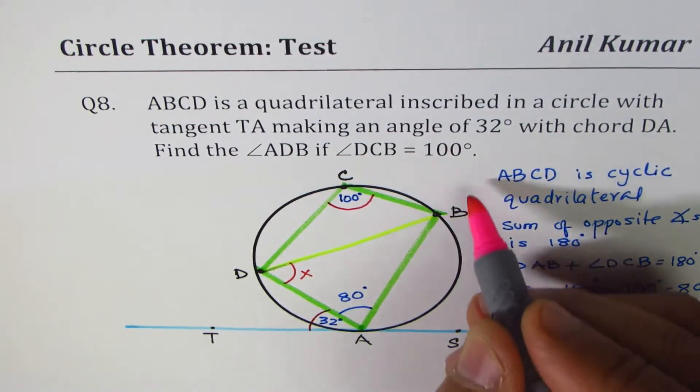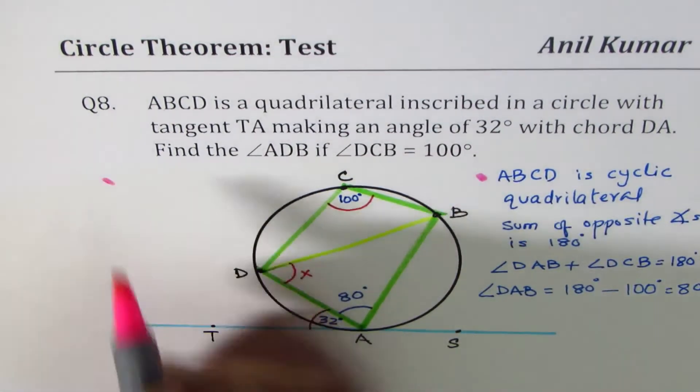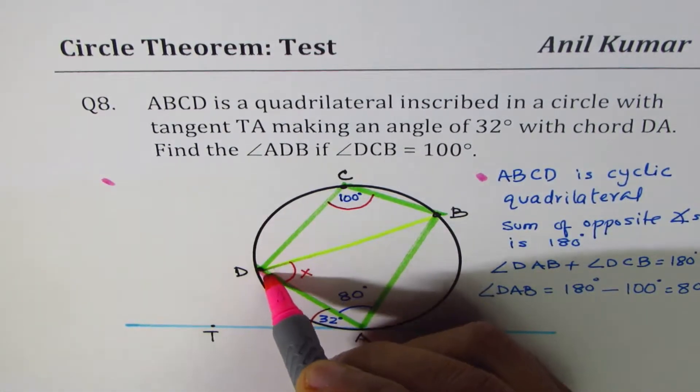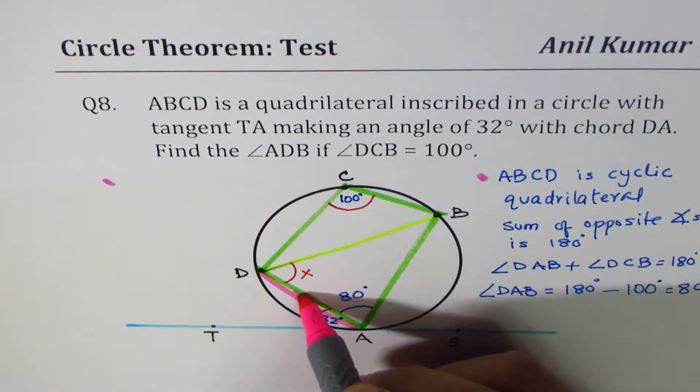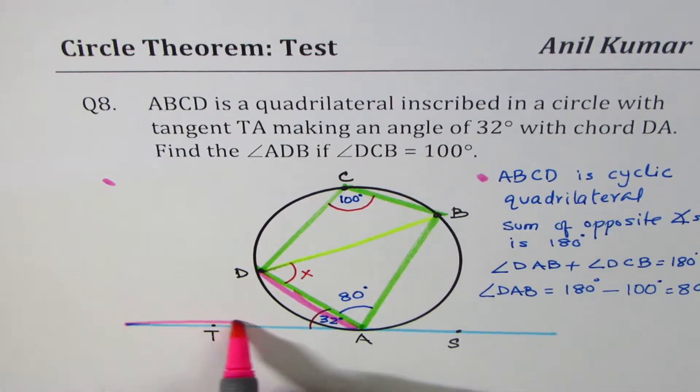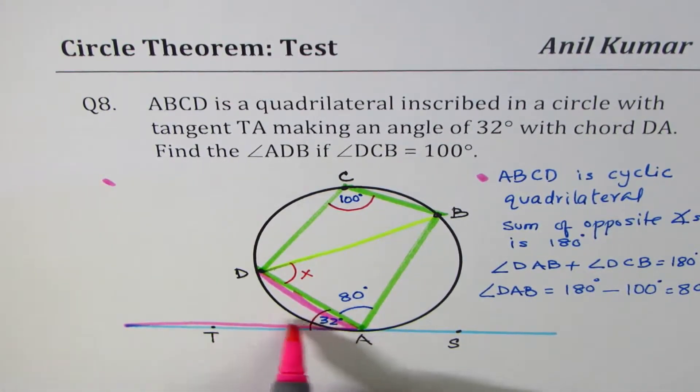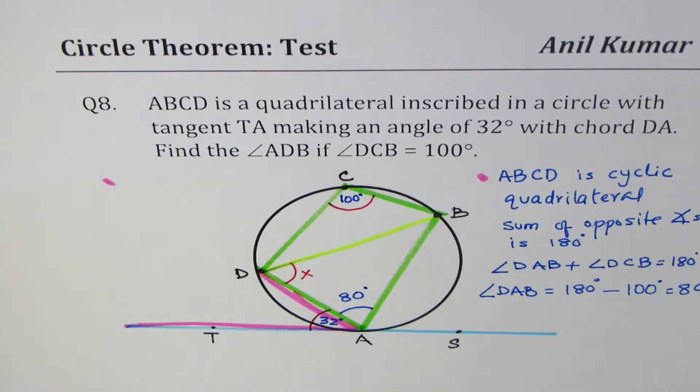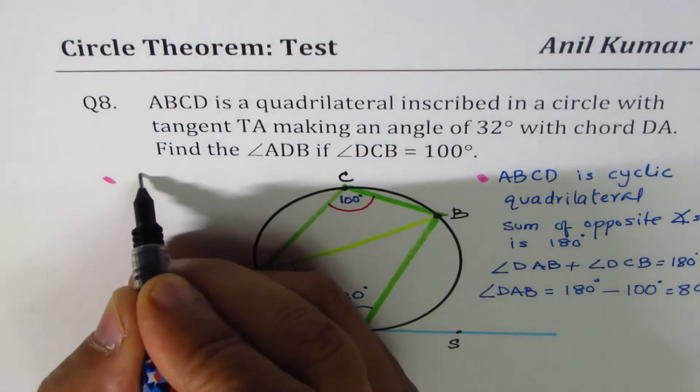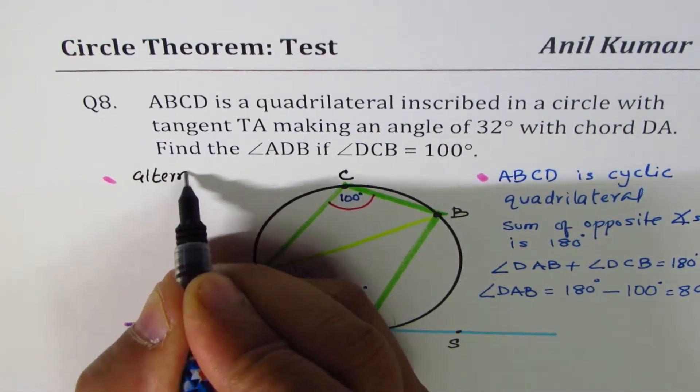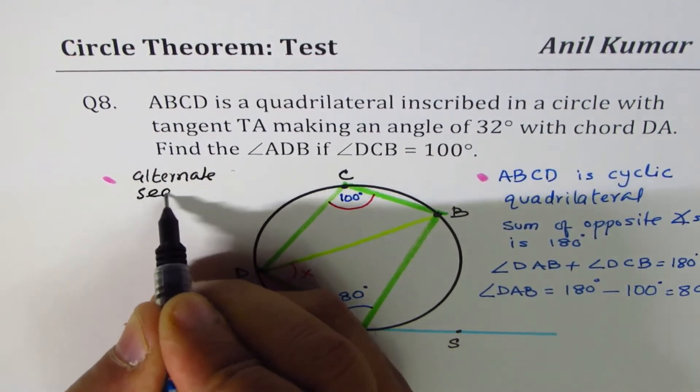Now, for that, we'll apply the second rule. That is, we have a chord. This is the chord. And that's the tangent. The angle between them is given to us. So this angle is equal to which angle? So you can apply the alternate segment theorem. We can apply alternate segment theorem.